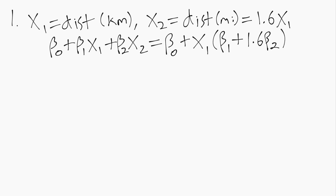So we know if we run OLS we could estimate this sum beta 1 plus 1.6 beta 2, but there's no way we can distinguish between beta 1 and beta 2. It's all just lumped together as the slope on x1.